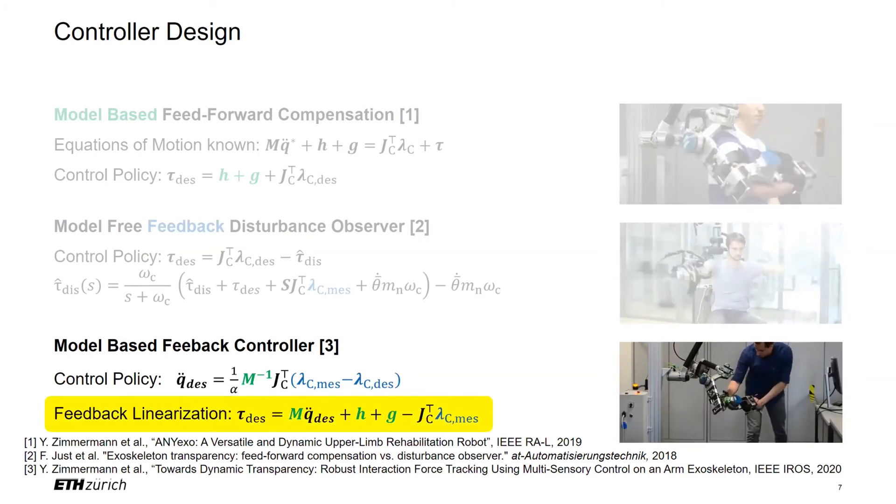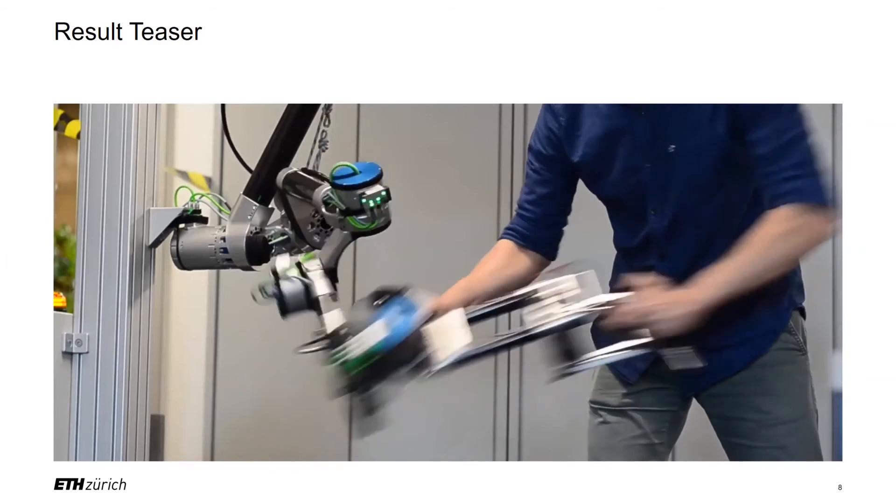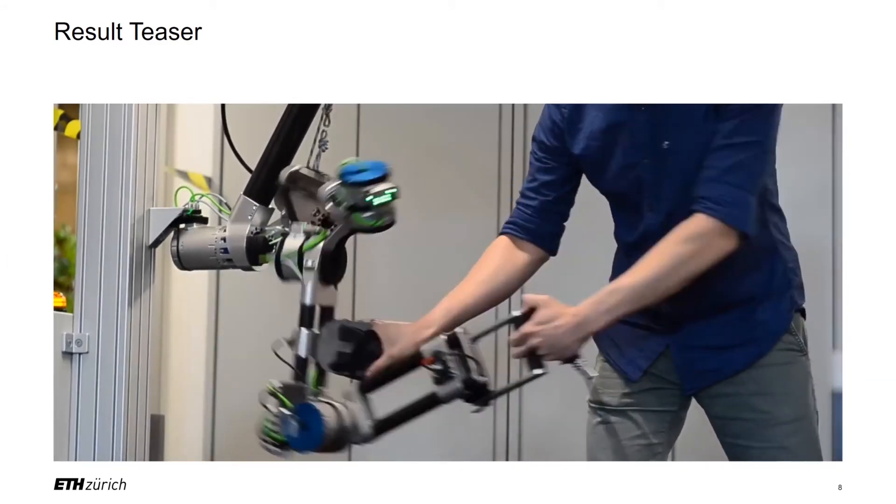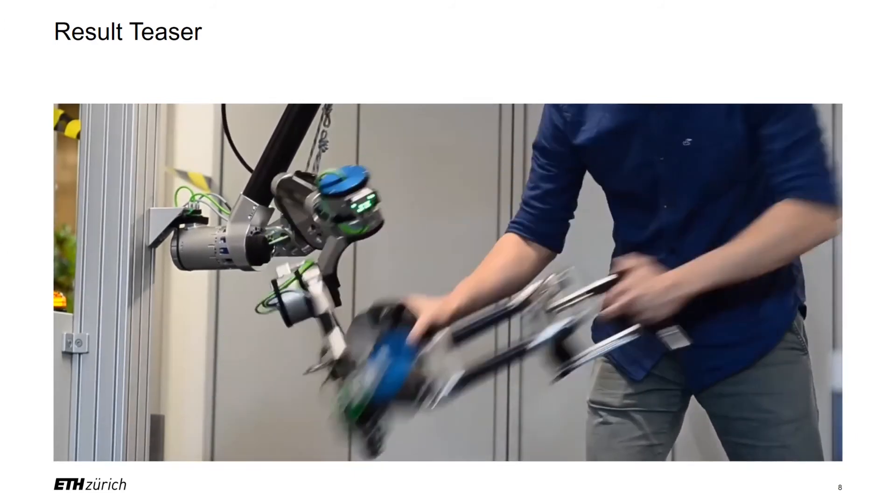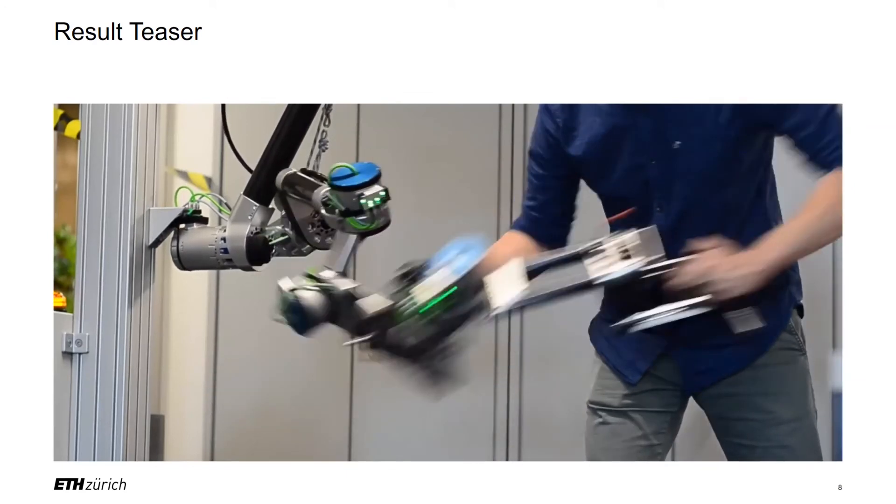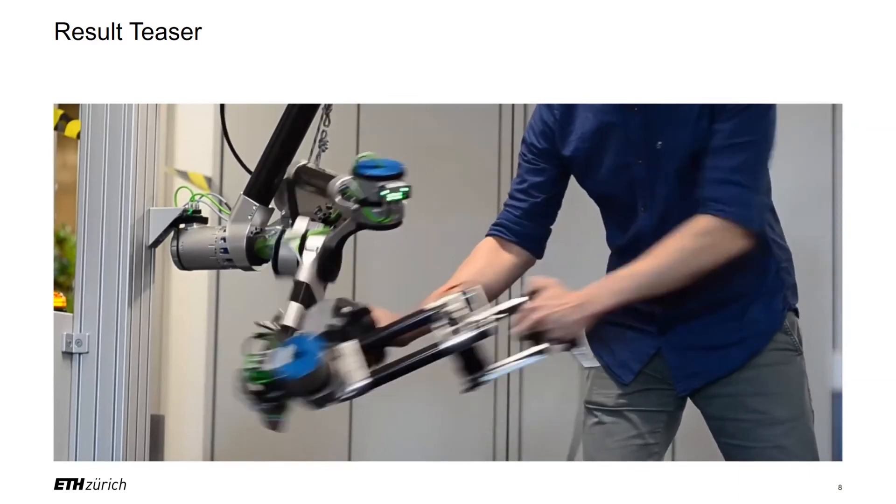First, we will have a look into the choice of the feedback linearization. Let's have a look at a video of the resulting controller. As you can see, there are large accelerations present in the excited movement, while barely any force is needed by the human to drive the robot. To make this possible, the environment that the robot interacts with, so here the human, has to be analyzed carefully.